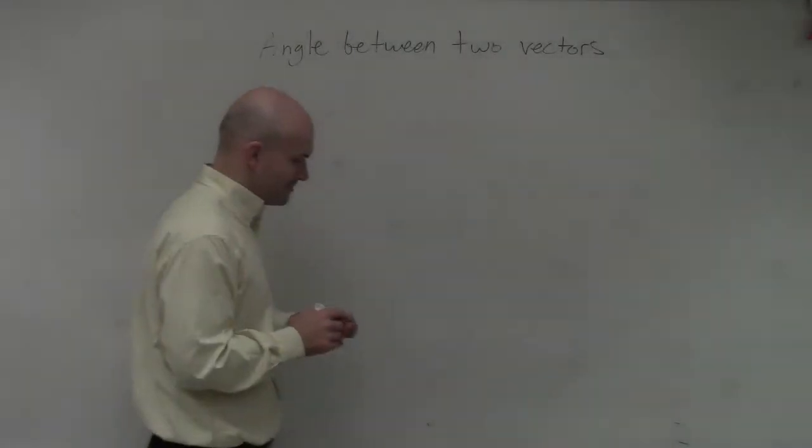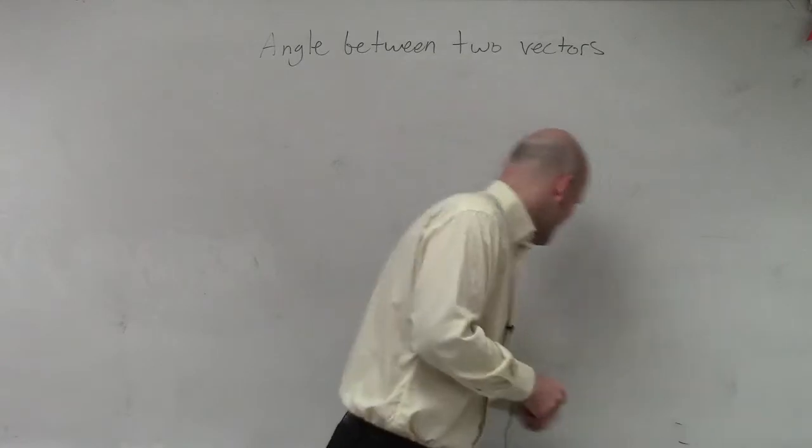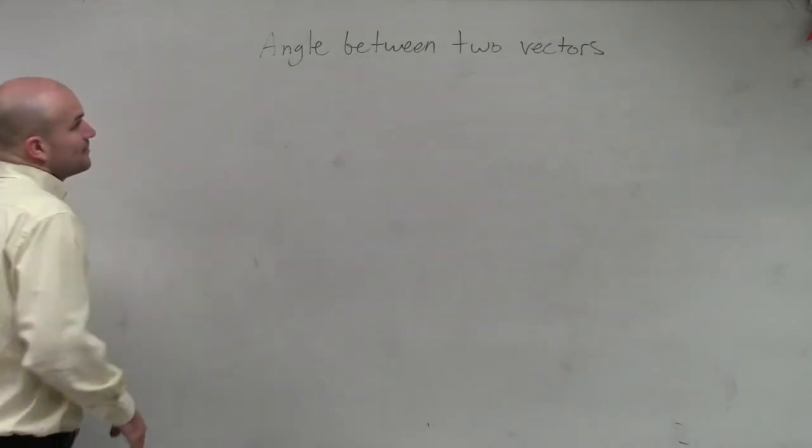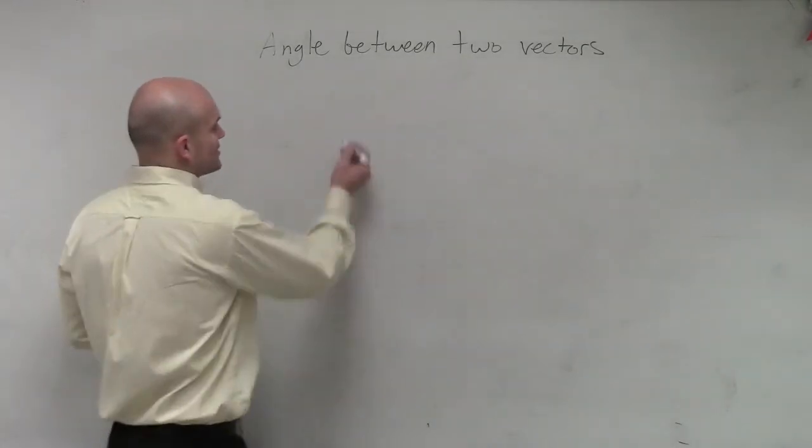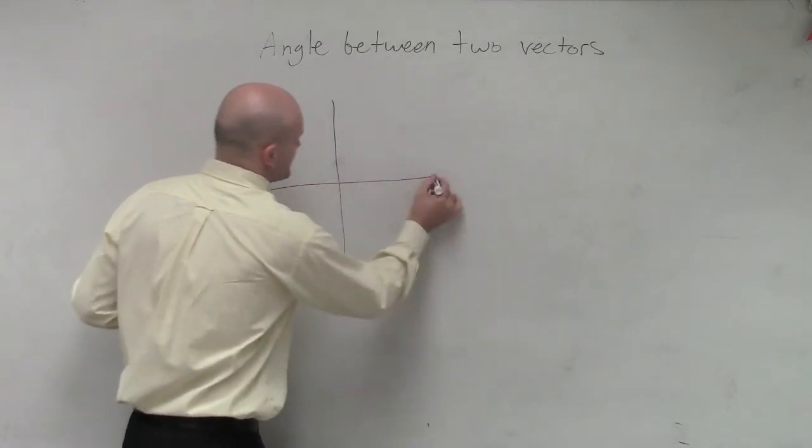Let's say I want to find the angle between two vectors. My markers are just dying on me. So if we just had two vectors, we'll go through the formal definition here.